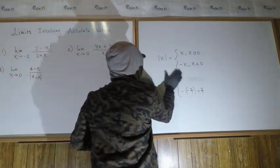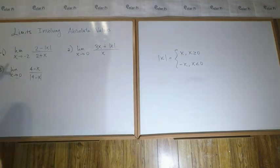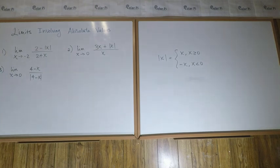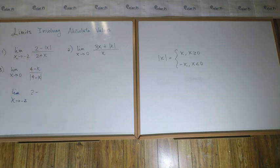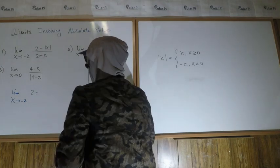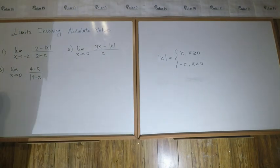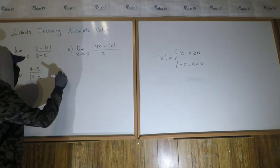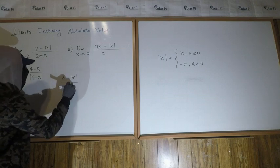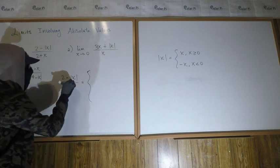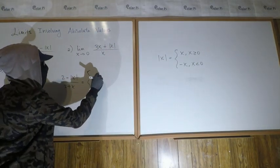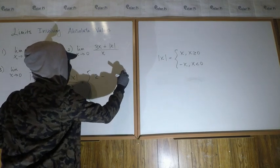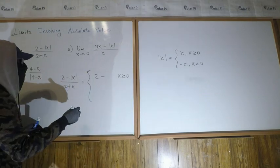This means we can take care of the first two limits quickly. For the first limit, as x goes to negative 2 of (2 minus |x|) over (2 plus x), we first define this function as a piecewise function. Since it involves simply the absolute value of x, this breaks over zero. When x is greater than or equal to zero, absolute value of x is just x, so the numerator is 2 minus x.